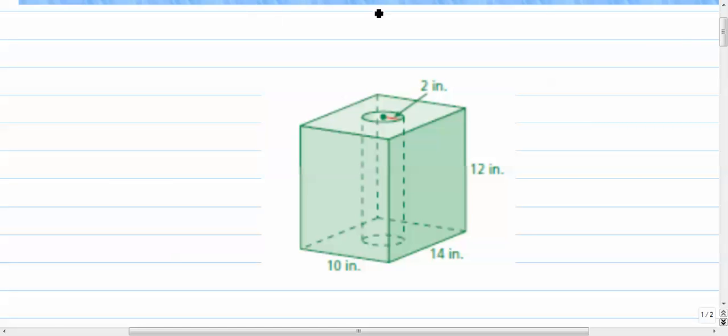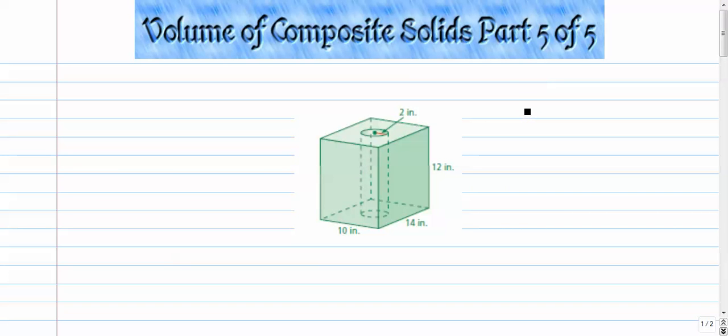Just like in video number 4, what we're going to do here is we're going to find the volume of the rectangular prism and subtract the volume of the cylinder. So here we go, let's find the volume of the prism first.